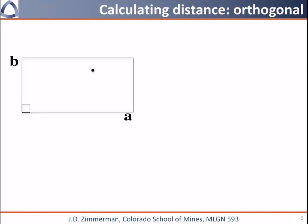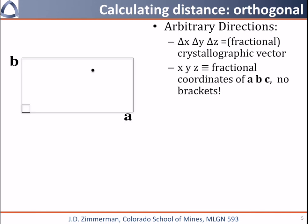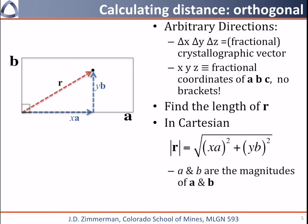I would now like to talk about calculating distances in crystals. We're going to calculate the distance of an arbitrary direction in this two-dimensional crystal here. We will define the arbitrary direction as delta x, delta y, and delta z, which is a fractional crystallographic vector, and each of these x, y, and z values are fractions of a, b, and c. Similarly, the position within a cell can be given by fractional coordinates of a, b, c, so these would just be x, y, and z times a, b, and c. If we want to calculate the distance between the origin and this point here, we are calculating the length of the vector r, as I have labeled it. This is really simple in Cartesian coordinates. The length of r is simply going to be given by the square root of x times a squared plus y, b squared, where a and b are the magnitudes of the crystallographic directions a and b.